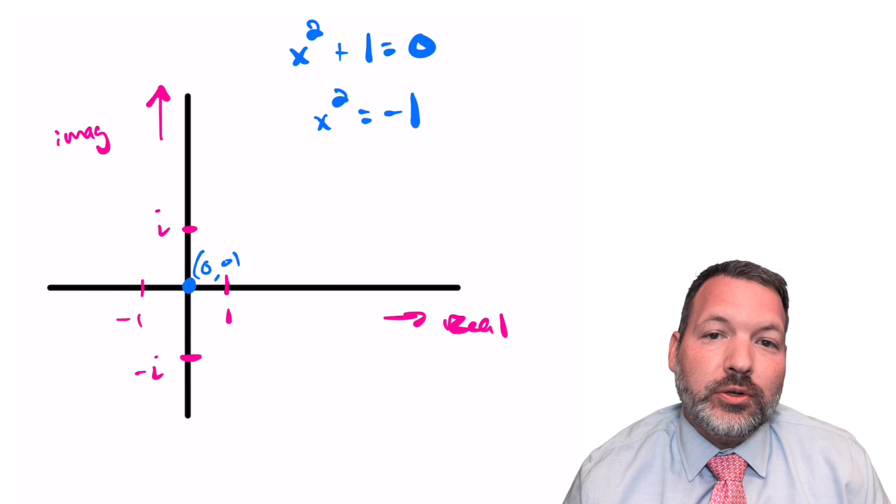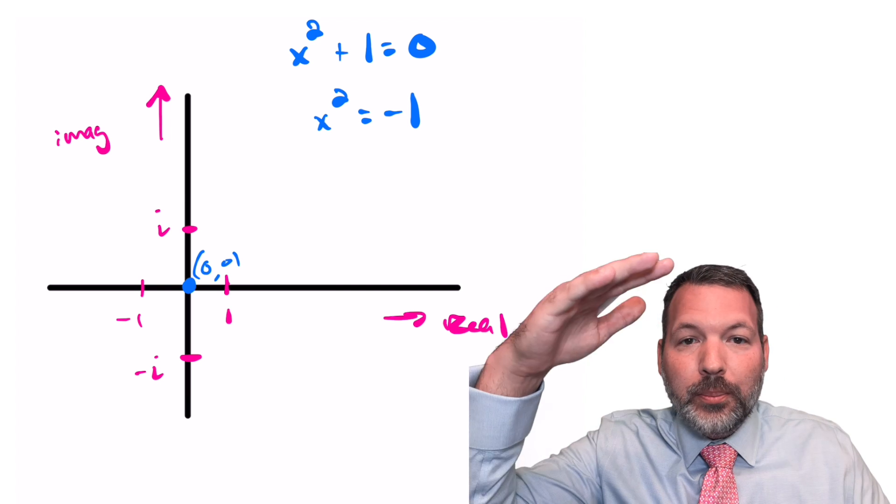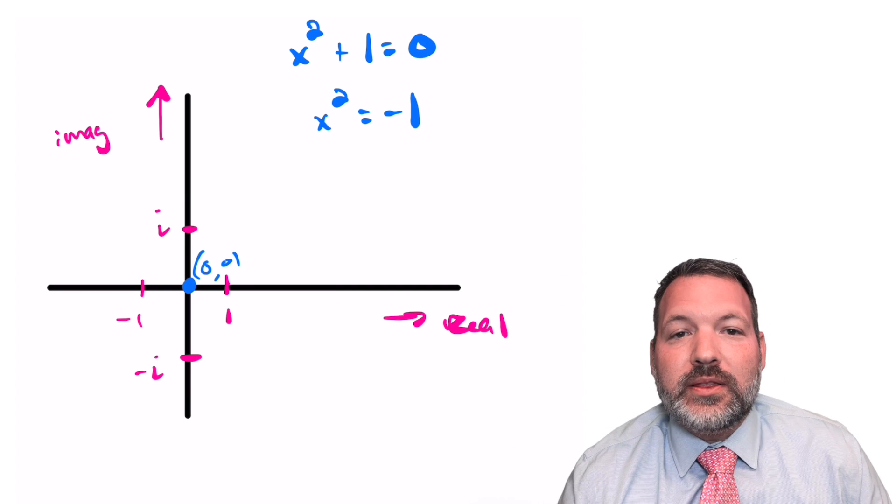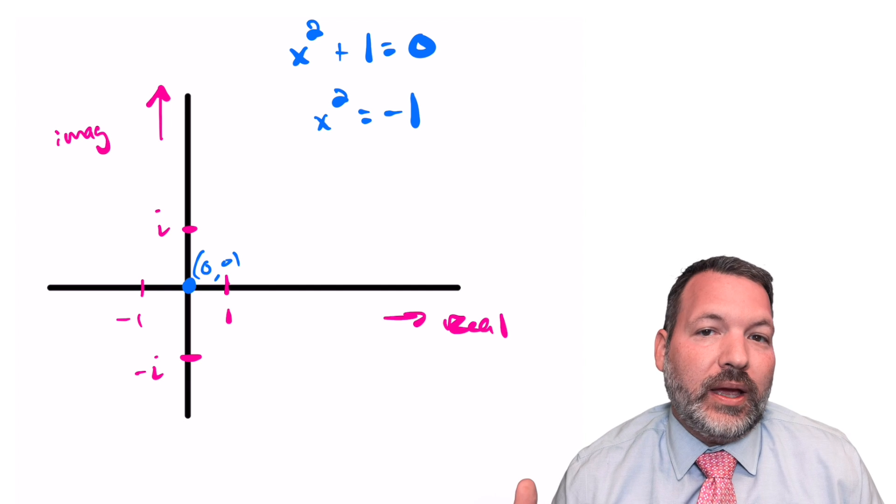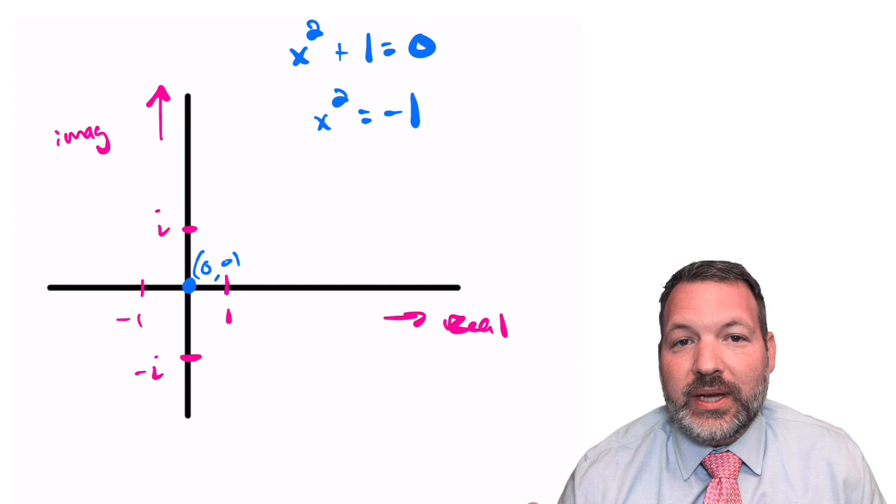Similarly, on our exponential curve, if we extend it to the complex plane, there are ways to think about e being raised to some power and giving you back a negative value that start to make sense.